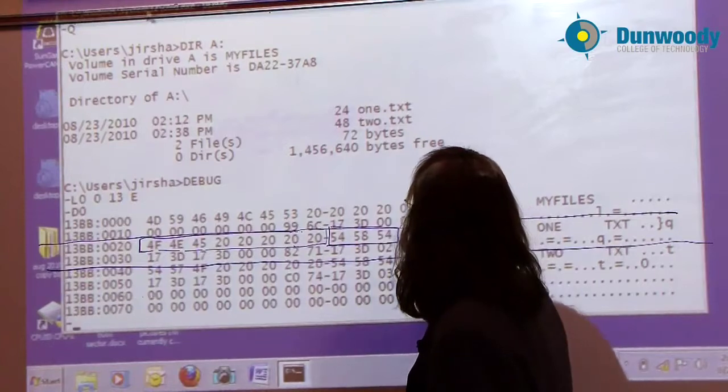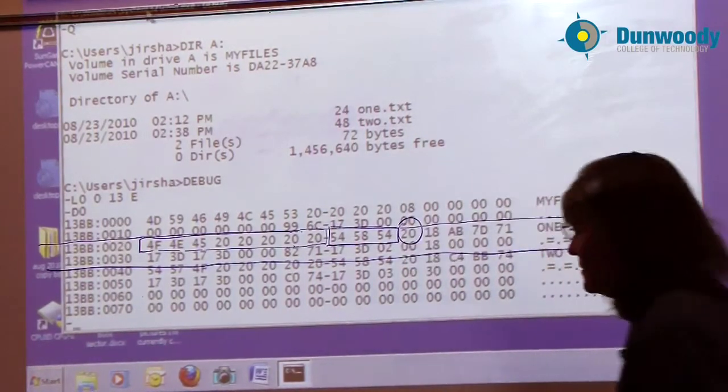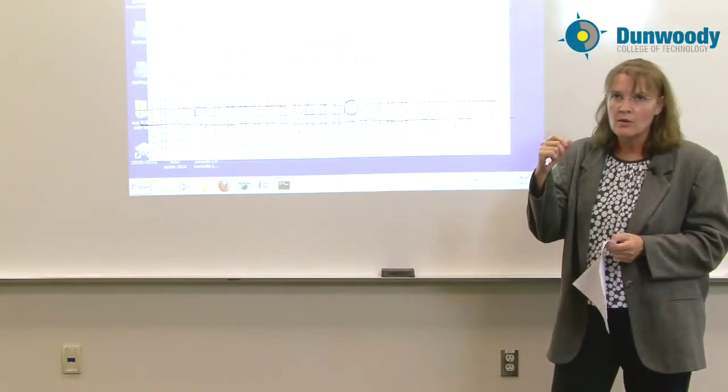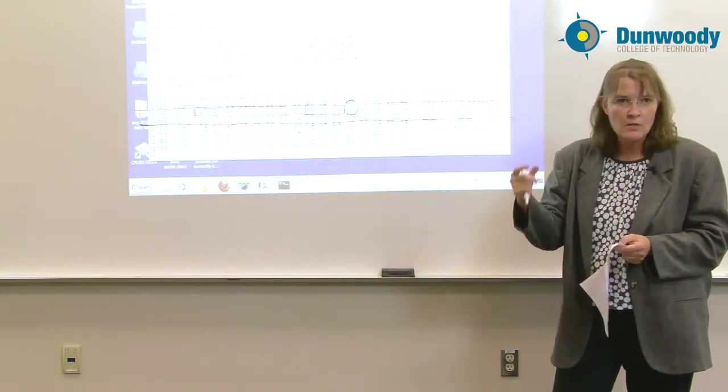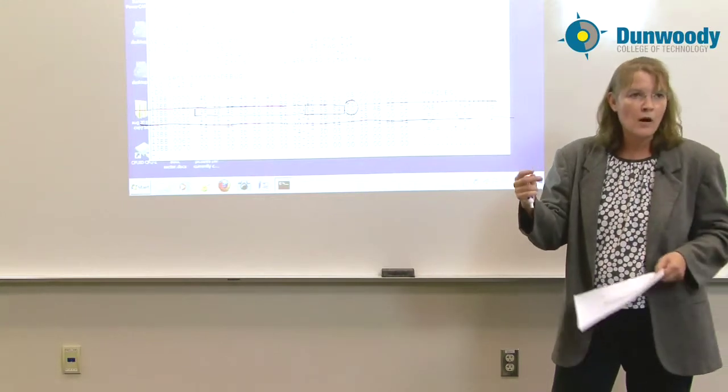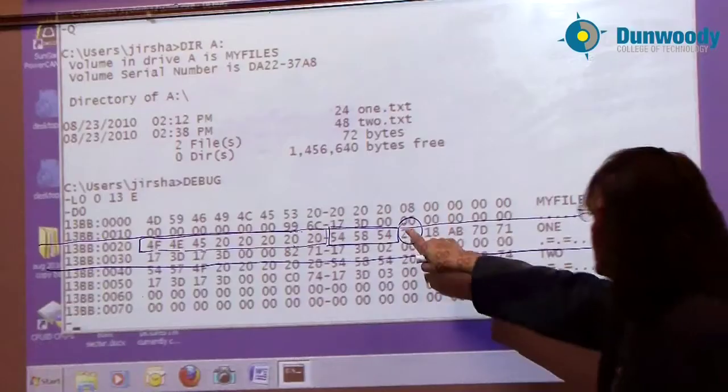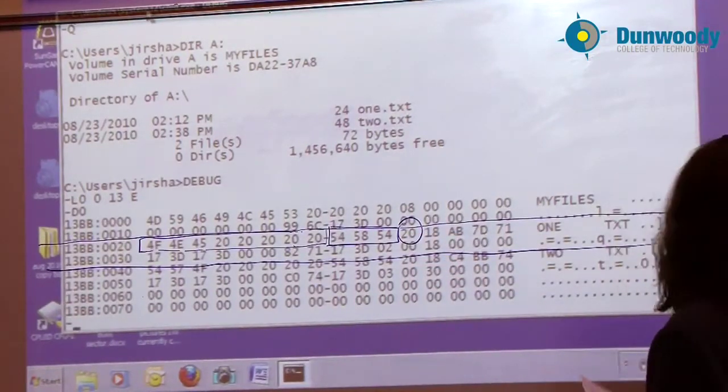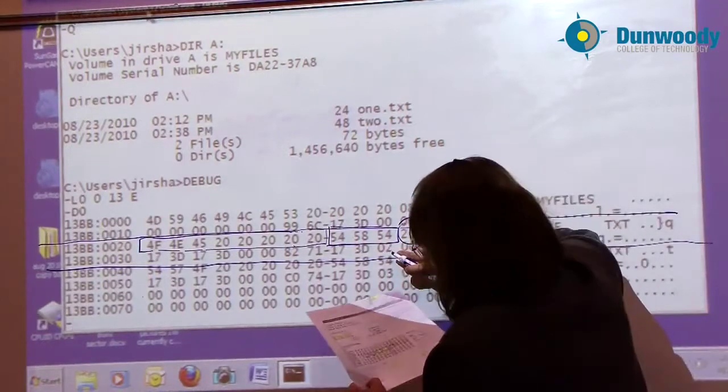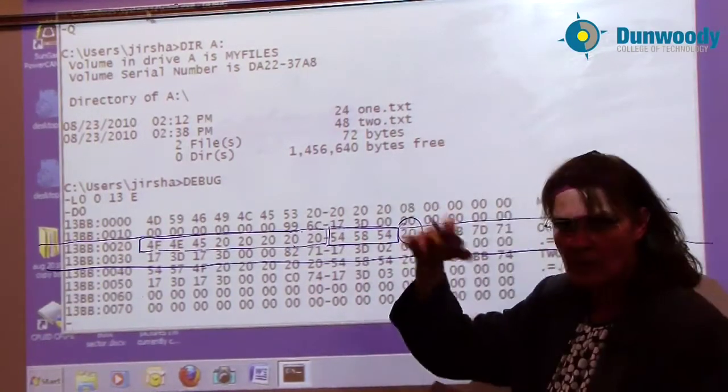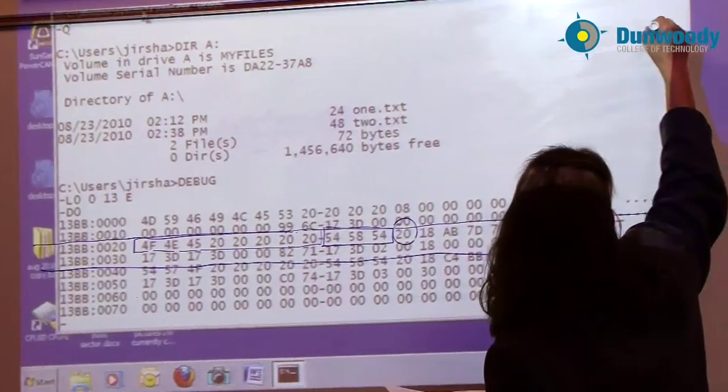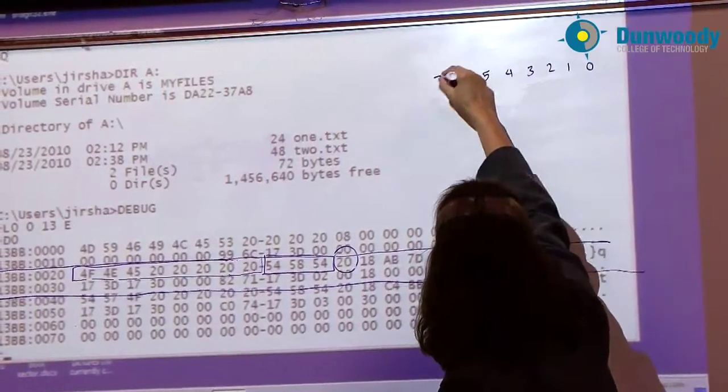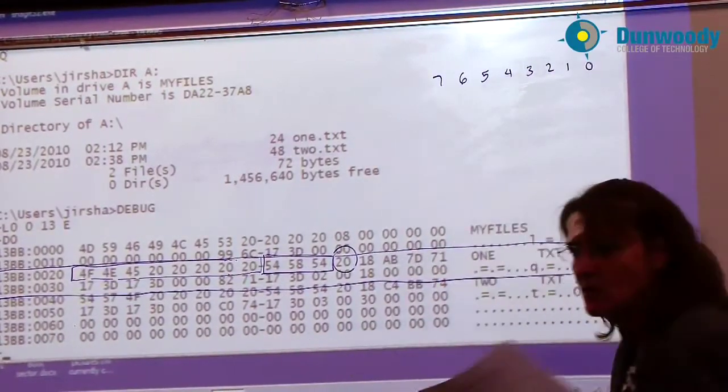The next byte over is the attribute byte. One byte to store whether or not that file is read-only, whether it's hidden, whether it's a directory, whether it's a volume label. All of that stored in one byte. How does it do that? Well, each bit means something in the attribute byte. And the coding for the attribute byte is going to be, you have 8 bits per byte: bit number 0, bit number 1, 2, 3, 4, 5, 6, 7 for all 8 bits. Each bit means something.